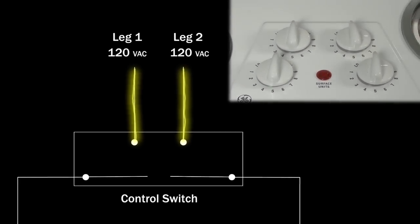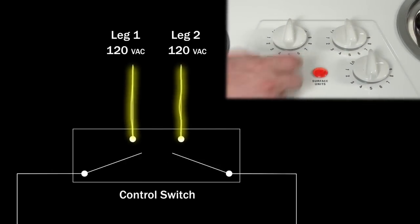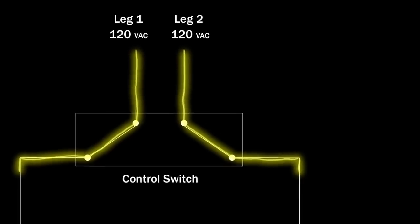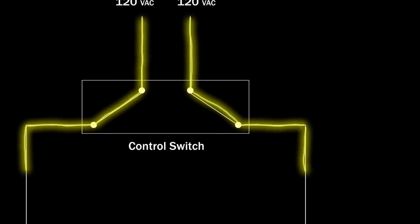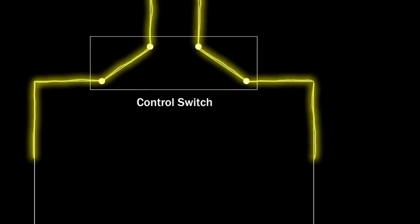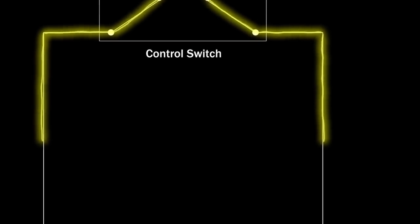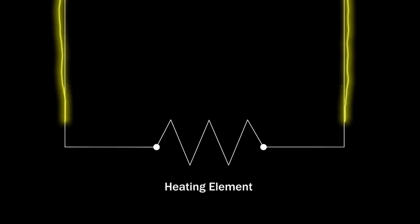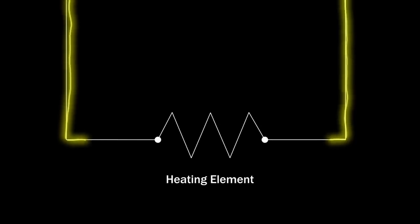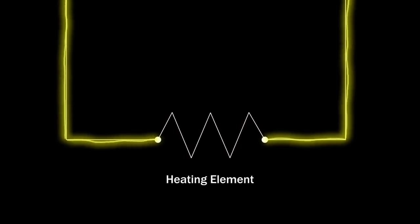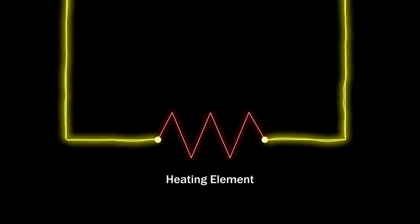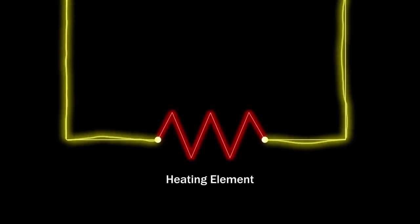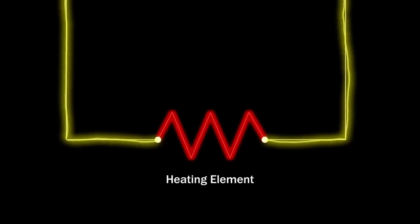When the selector knob is turned to a heat setting, the switch allows the first leg of voltage to travel to one side of the heating element and the second leg of voltage to travel to the opposite side. When the voltage reaches the heating element, the circuit is closed and the element begins to heat.